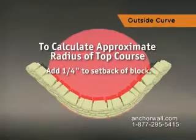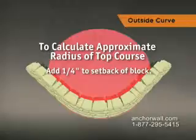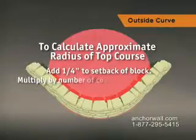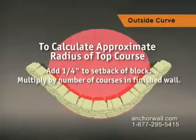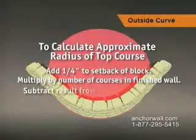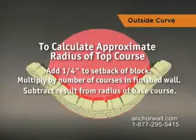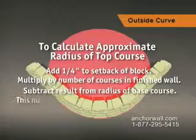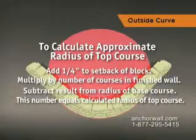Add 1 quarter inch to the setback of the block used. Multiply that amount by the number of courses in the finished wall. Then subtract the result from the radius of the base course. This number equals the calculated radius of the top course.